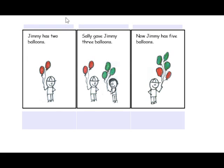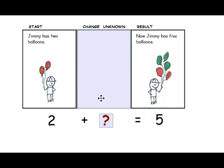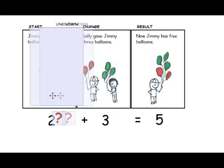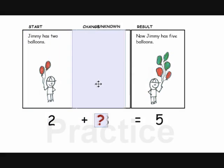When problem solving with students, practice identifying the problem type: join with the result unknown, the change unknown, or the start unknown. Using these picture stories, have students cover one frame and phrase the question to find the unknown value.